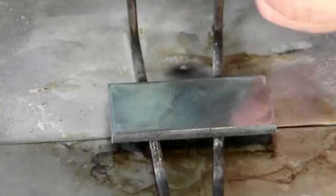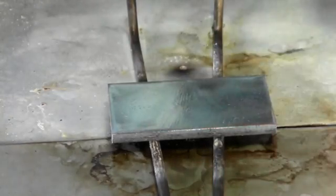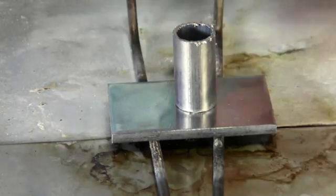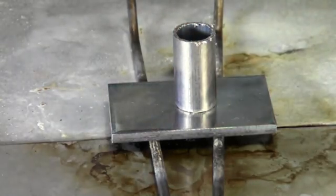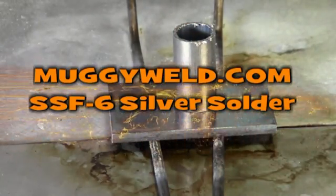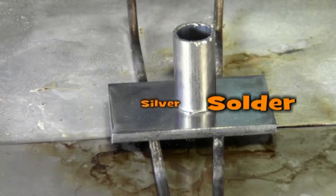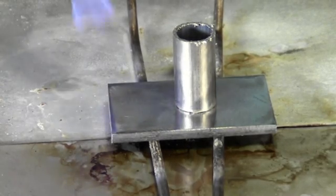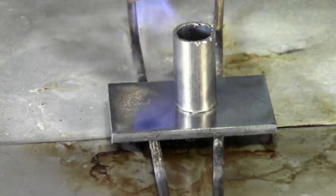We're going to braze steel to stainless steel. We're working with our SSF-6. Now the steel is a little bit thicker so I'm going to put more of my heat to the steel and then I'm going to start working on my stainless steel.